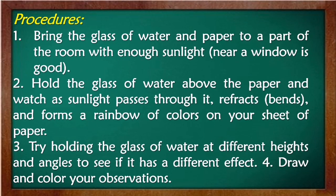The title of the activity is 'Refraction of Light.' The materials are easy to find at home: a glass of water three-fourths full, white bond paper, sunlight, crayons, and a pencil. Procedure: bring the glass of water and paper to a part of the room with enough sunlight — near a window is good. Hold the glass of water above the paper and watch as the sunlight passes through it, refracts or bends, and forms a rainbow of colors on your sheet of paper. Try holding the glass of water at different heights and angles to see if it has a different effect. Draw and color your observations.